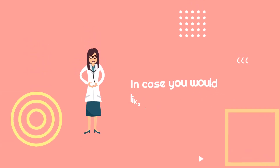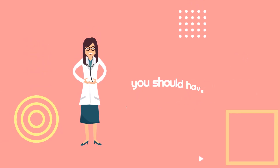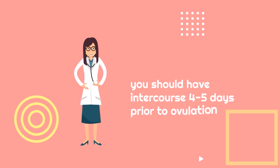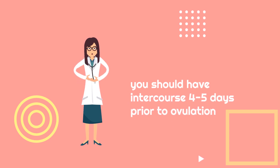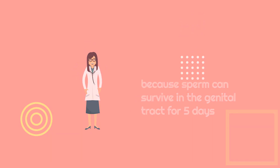In case you would like to get pregnant, you should have intercourse 4 to 5 days prior to ovulation, because sperm can survive in the genital tract for 5 days.